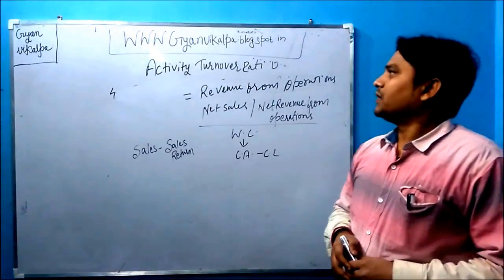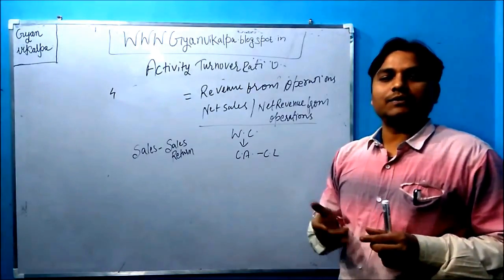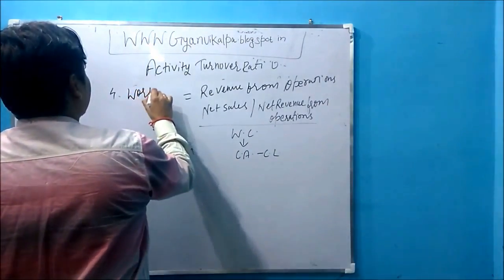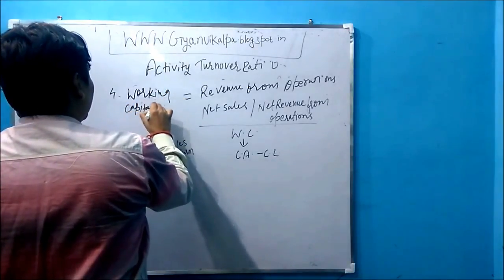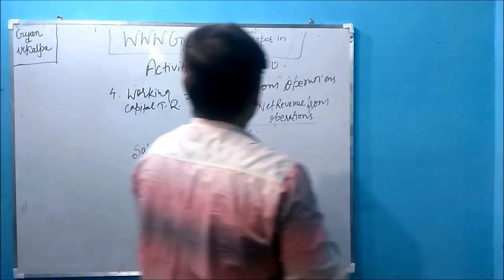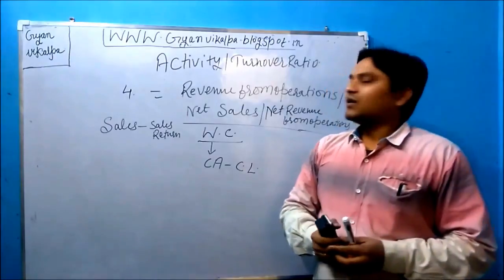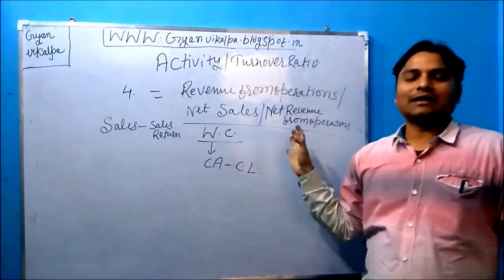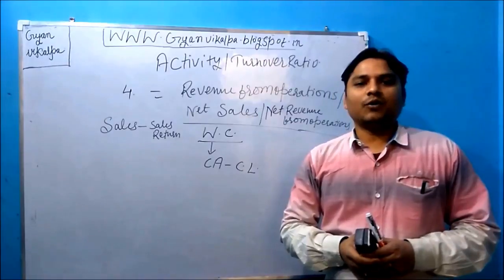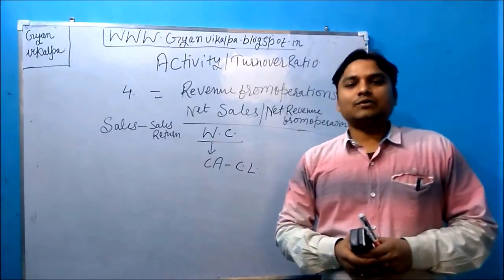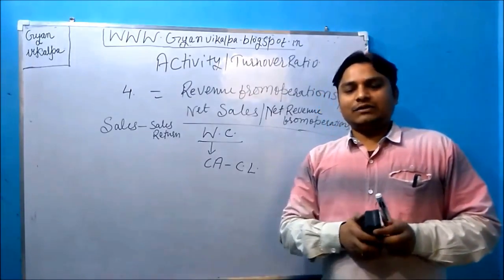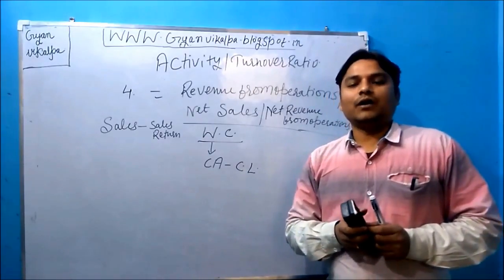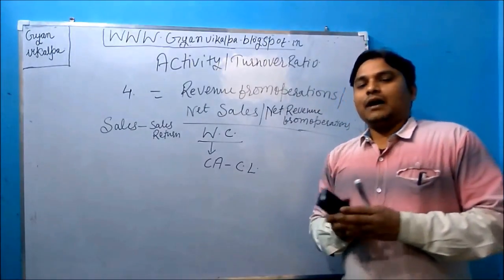In this video we have learned all four types of activity ratio: inventory turnover ratio, trade receivable turnover ratio, trade payable turnover ratio, and working capital turnover ratio. These are the four formulas under activity or turnover ratio for examination purposes. Notes for all these formulas are available on the blog www.gyangvikalp.blogspot.in. The ratio chapter has been divided into four parts for clarity.